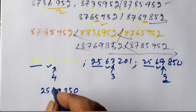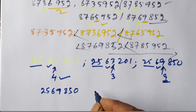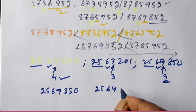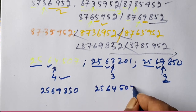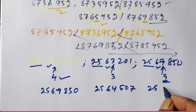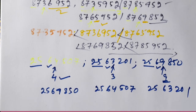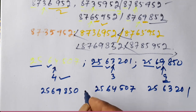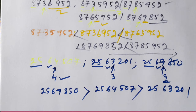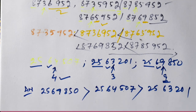The second largest has 4 in the fourth place: 2564507. Then the third is 2563201. So the descending order is: 2569850 greater than 2564507 greater than 2563201. We use the greater than symbol between each. This is the answer.